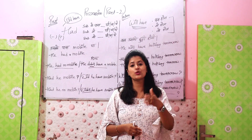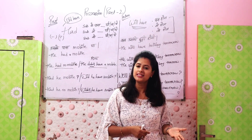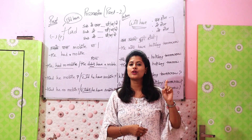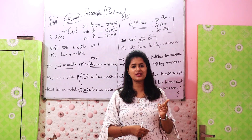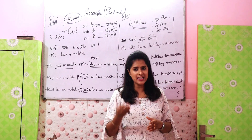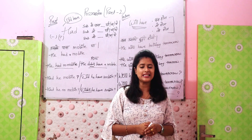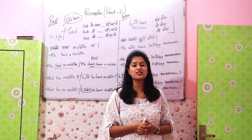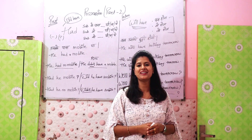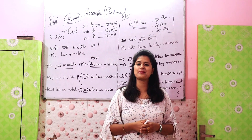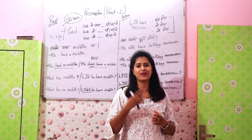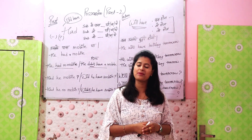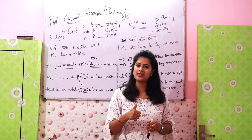And finally, say five things you will have — jo aapke paas hone wali hain. To recap the full exercise: five things you have, five things you don't have, five things India has, five things India doesn't have, five things you had, five things you didn't have, and five things you will have. If you practice all of these, it will help you to a great extent to understand the concept of possession. Ye aapko possession ka concept samajhne mein bohot help karega.